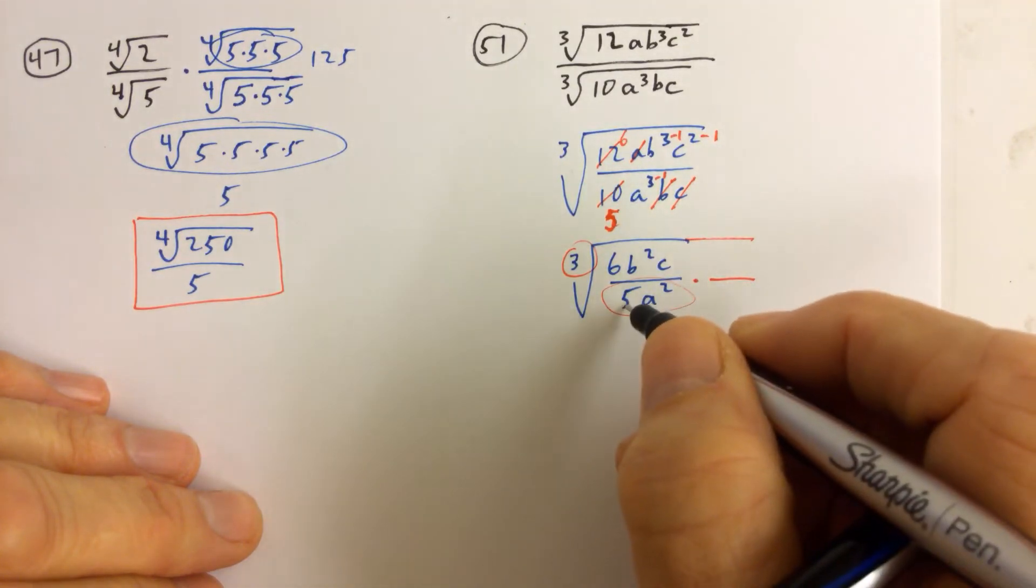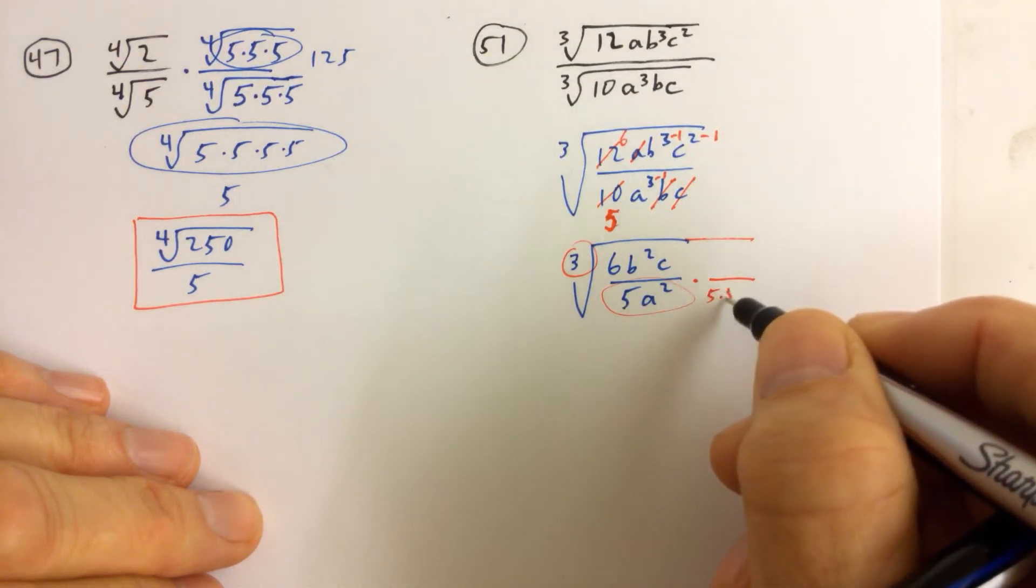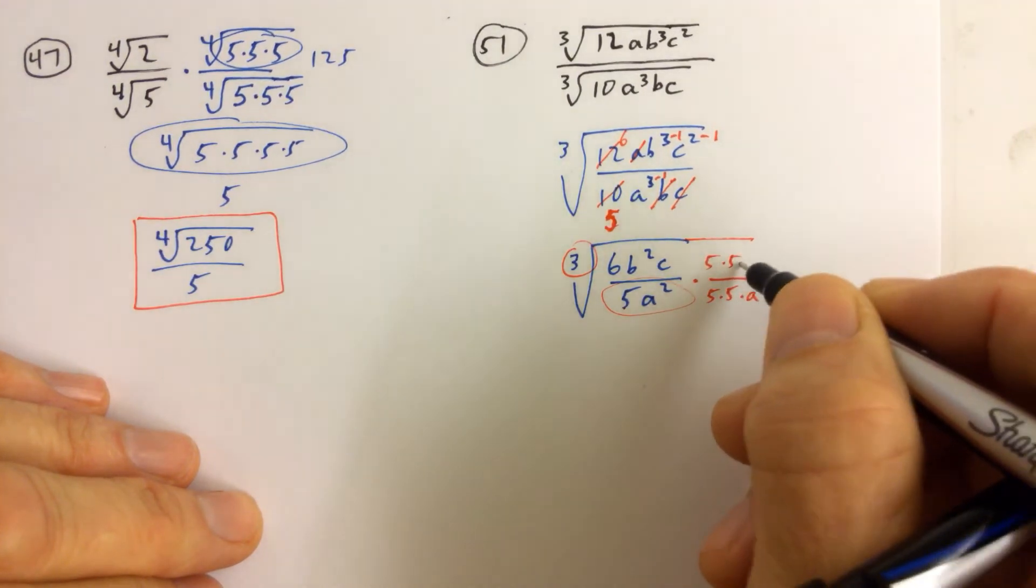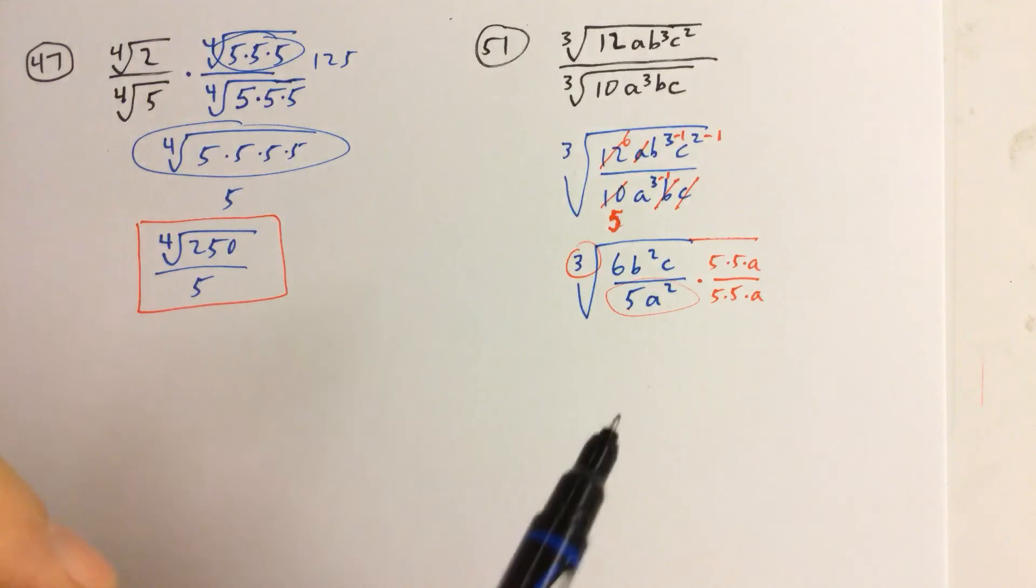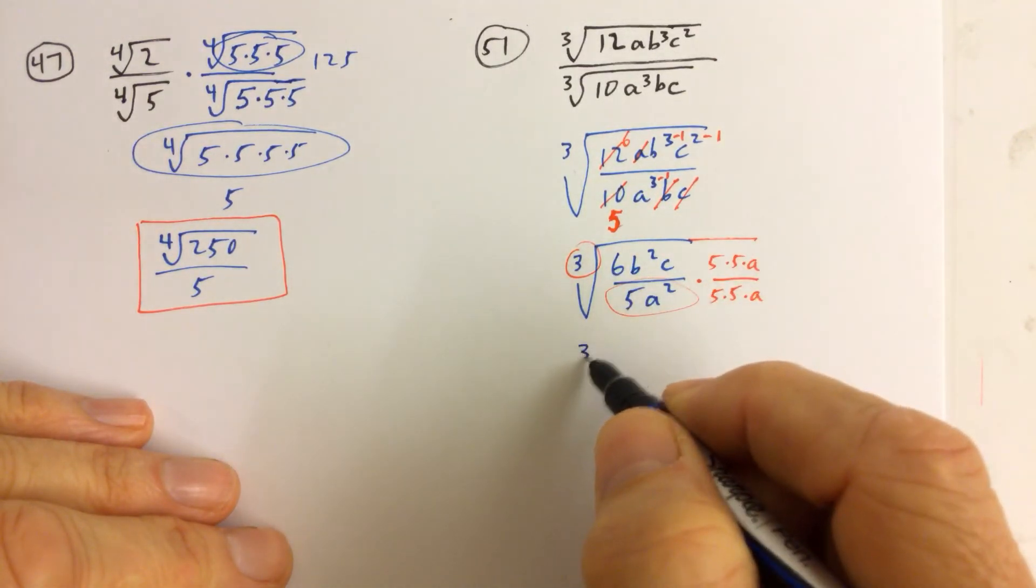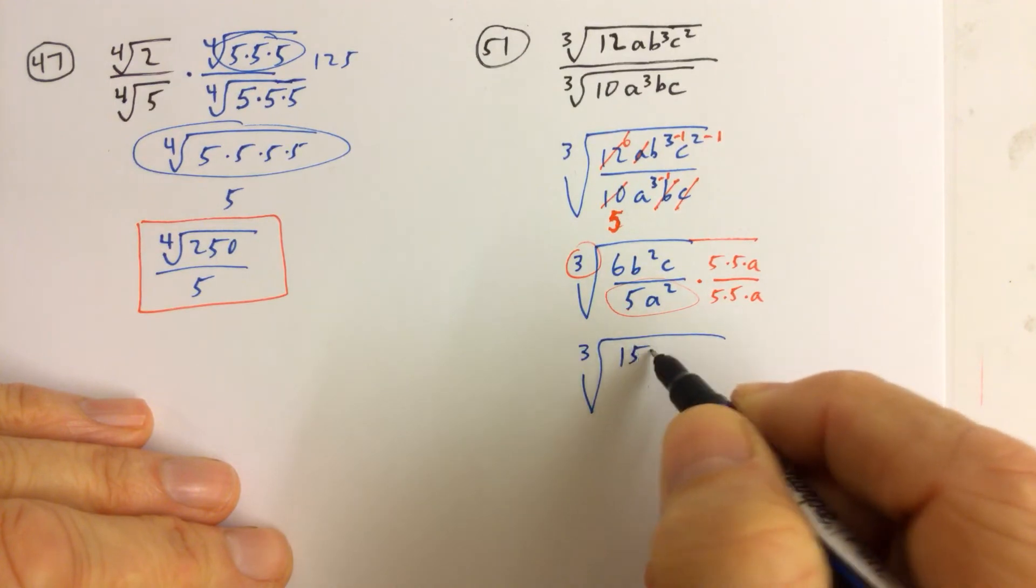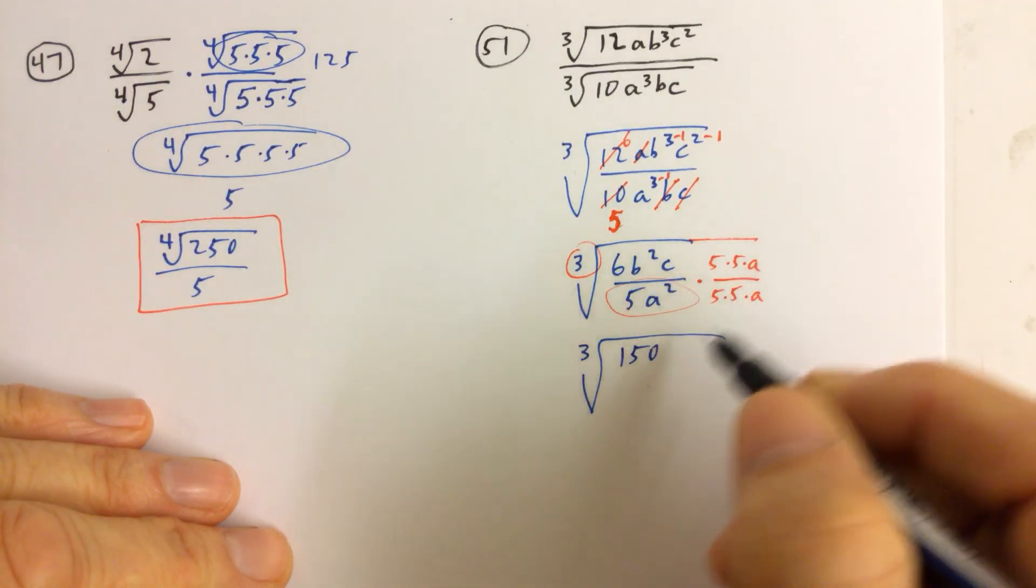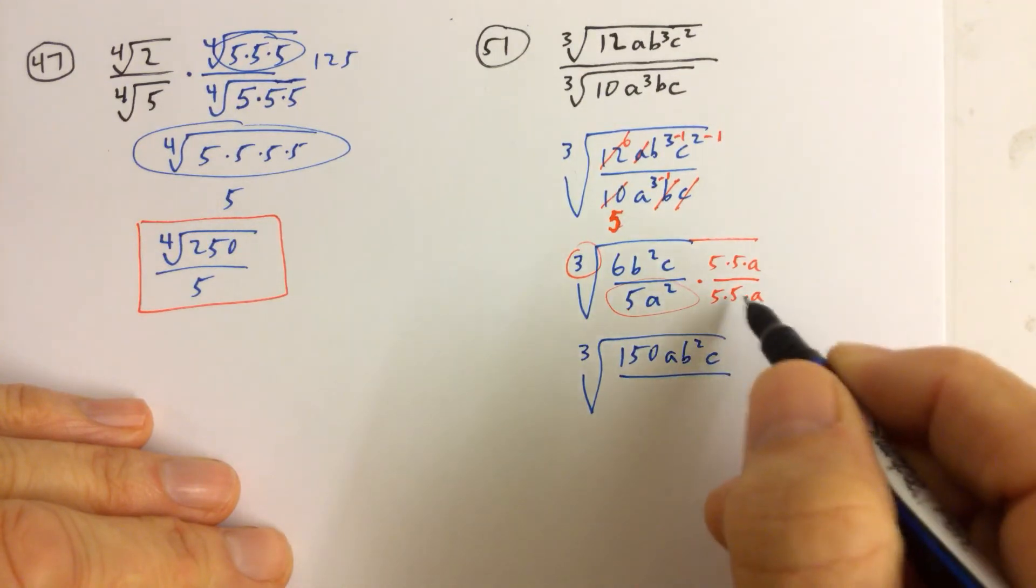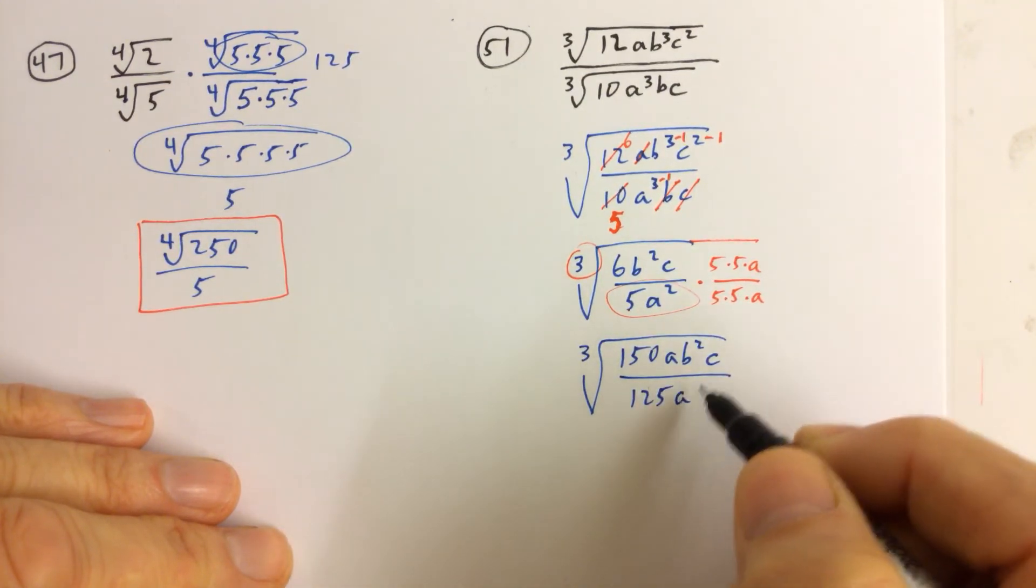we need 2 more 5, so we have 5 times 5, and we need 1 more a. So we're going to multiply top and bottom of this fraction underneath the cube root by 25a. And 25 times 6 is 150, so we have 150, and then we have an a in there, we have a b squared in there, and we have a c all over 125a cubed.